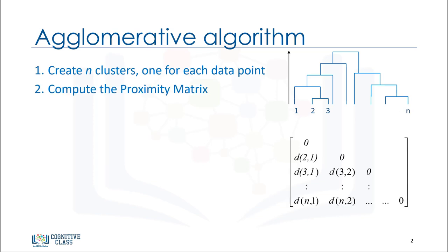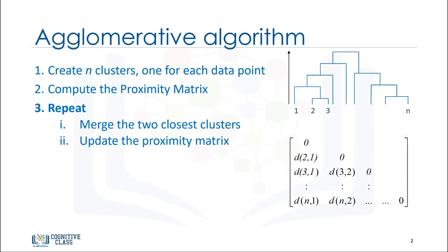Next, we want to compute the distance proximity matrix, which will be an n by n table. After that, we want to iteratively run the following steps until the specified cluster number is reached, or until there is only one cluster left.